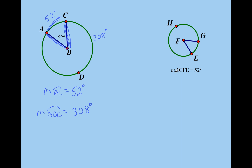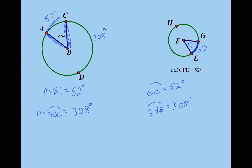Let's look at another example. Angle GFE is 52 degrees, so arc GE is 52 degrees. The major arc would be 308 degrees. Now, do you think arc GE here is congruent to arc AC on the other circle? They have the same degrees, but in actual length they are not equal to each other because this circle is bigger. So you've got to be careful with that.